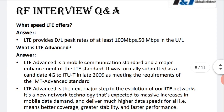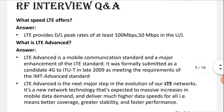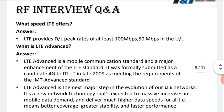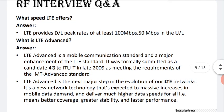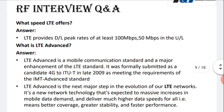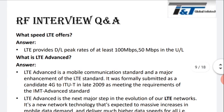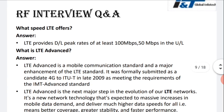Once LTE Advanced comes, we can get more than 100 Mbps data speed, approximately 300 to 400 Mbps, and uploading will be more than 100 Mbps. That is the difference between LTE and LTE Advanced. Whatever is shown here — 100 Mbps, 50 Mbps in LTE — that is the theoretical value, and the practical value will be different.